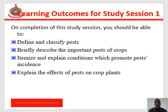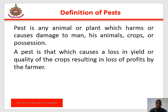Learning outcomes for Study Section 1: On completion of this study section, you should be able to define and classify pests, briefly describe the importance of pests of crops, itemize and explain conditions which promote pest incidence, and explain the effects of pests on crop plants.